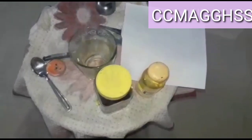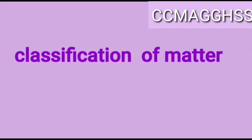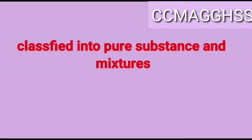In eighth grade you studied the classification of matter based on physical state. Now let us see how we can classify matter based on chemical composition. It has been classified into pure substance and mixture. In chemistry, pure substance contains only one kind of particle, while impure substance — that is, a mixture — contains more than one kind of particle. Now let us see the flow chart.